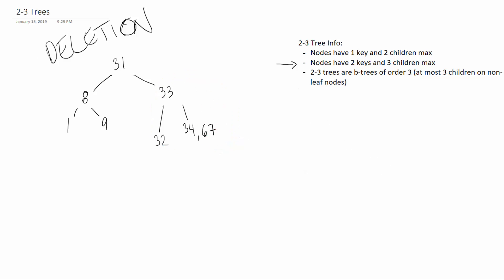Now, because we hate ourselves, we're going to delete 33. What happens now? It's actually not so bad. 32, 34, and 67 are all still greater than 31, so we're not touching the root — we're still working with the right subtree. We take out 33 and there's a free spot. 34 gets promoted to fill it. We end up with 34 as the parent, with 32 and 67 as children in our rightmost subtree.